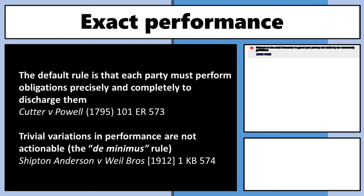We'll start with Cutter v Powell — a case involving a crewman on a boat. The boat was to travel from Jamaica to Portsmouth in England. The person was to be paid 30 guineas, which was a really good wage. The contract said: act as second mate from Jamaica to Portsmouth and you'll get 30 guineas. The problem was, three-quarters of the way through the voyage, he died.